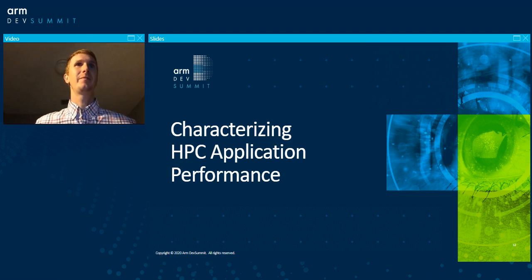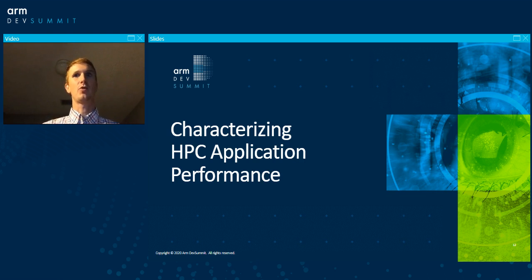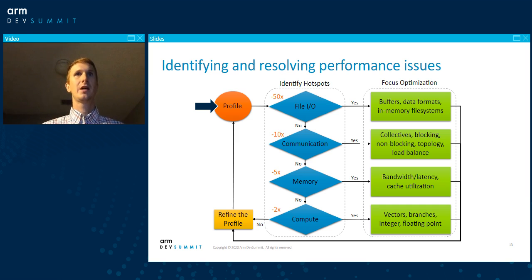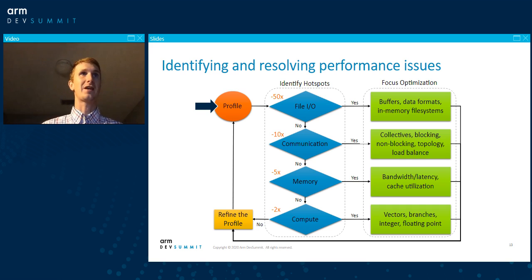Thanks, Stefan. I'm going to talk more generally about how you can characterize HPC application performance on any platform, and then I'll call out the parts which are more specific to AWS Graviton and ARM. Whenever you start a performance engineering effort on a code, you want to begin by profiling your code. There are a number of very good profilers out there, and I'll introduce a few — all of which work on the Graviton.